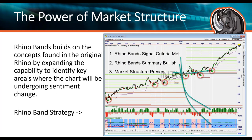The Rhino Band can be used in real time or end of day. It's configured right out of the box to work in both capacities, whether you're an intraday trader or end-of-day trader. It works on non-time-based timeframes like Heikin-Ashi, as well as minute, three-minute, five-minute, whatever you want to use. This is a really great indicator to give you quick turnaround.